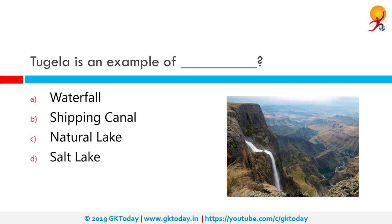Tugela is an example of what? The correct answer is waterfall. Tugela Falls is a complex of seasonal waterfalls located in the Drakensberg of Royal Natal National Park in KwaZulu-Natal Province of the Republic of South Africa.